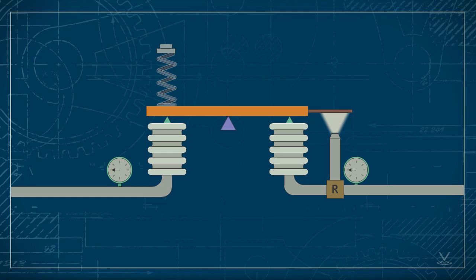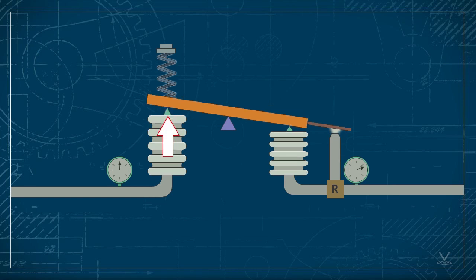If the process variable exceeds setpoint, the controller's input increases, expanding the input bellows. This increases the force of the input bellows and overcomes the spring tension. The beam moves up, causing the controller to be out of balance.